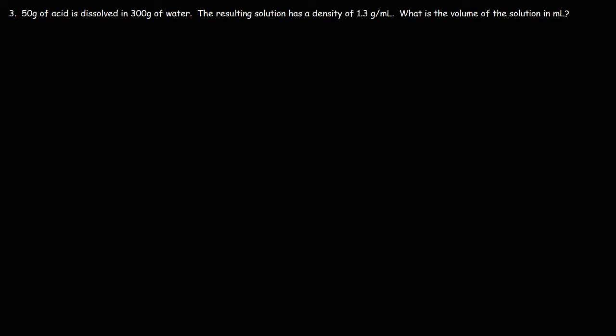Now let's work on one more problem. 50 grams of acid is dissolved in 300 grams of water. The resulting solution has a density of 1.3 grams per milliliter. What is the volume of the solution in milliliters? The first thing we need to do is determine the total mass of the solution. The acid is the solute, water is the solvent — water dissolves the acid. When you combine the solute and the solvent, you get the solution. So the mass of the solution is 50 plus 300, which gives us 350 grams of solution.